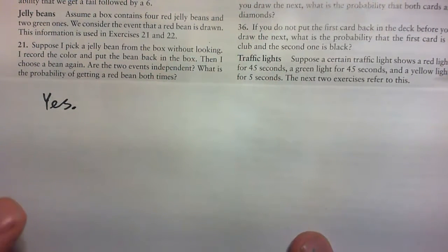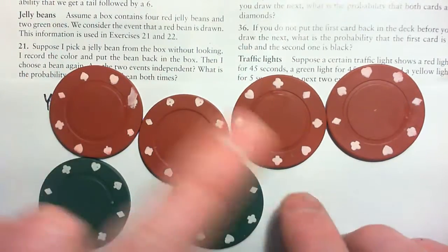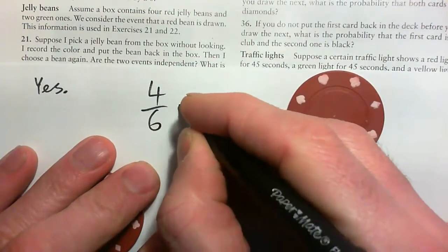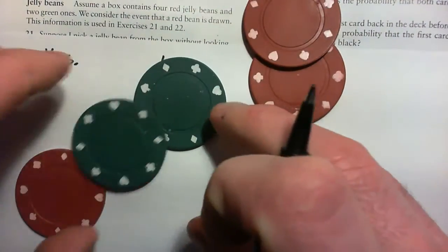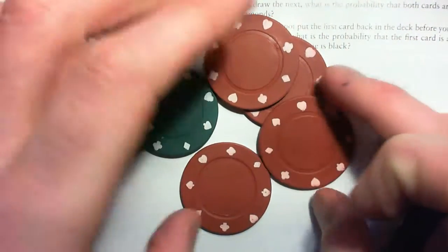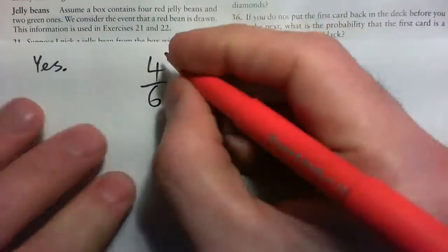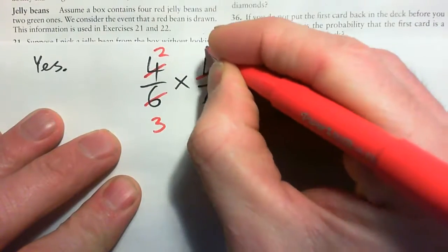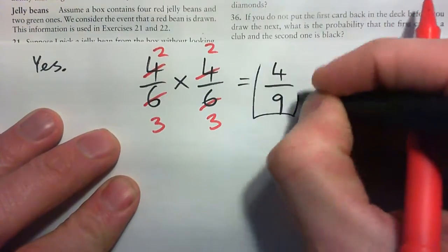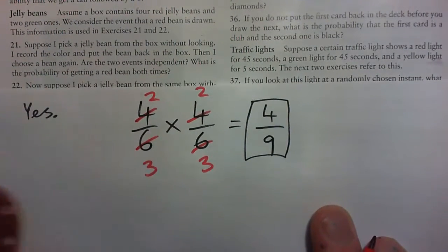What is the probability of getting a red bean both times? Remember, we put the bean back in the box. So getting it the first time is four chances out of six. We want to get red the second time as well. We replace it, so now it's just another four over six. So it's four over six times four over six. You can simplify that: two into four goes twice, two into six goes three times — giving two over three each time. So two times two is four, over three times three is nine. The answer is four over nine for that first question — that's the probability of getting a red bean both times.